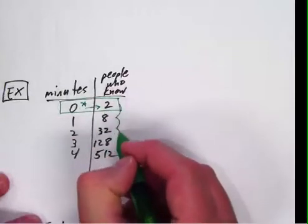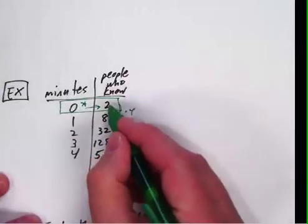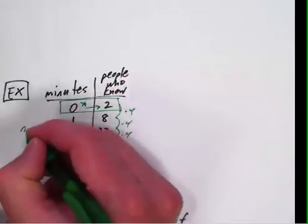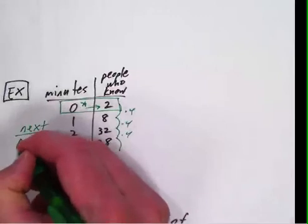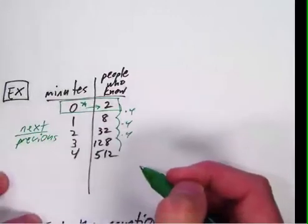Then we can look at this and see what it goes by. Now it's pretty easy to see that this is multiplied by 4 every time, because we can do 2 times 4 is 8, 8 times 4 is 32, and so on. But if you can't see that, the rule for finding it is next divided by previous is the rule for finding the next number or the multiplier in an exponential situation.